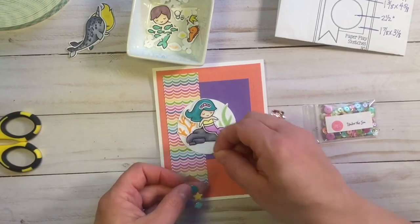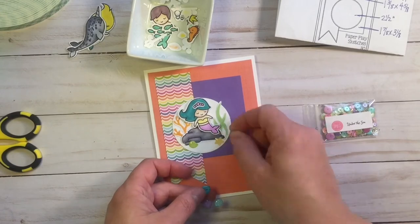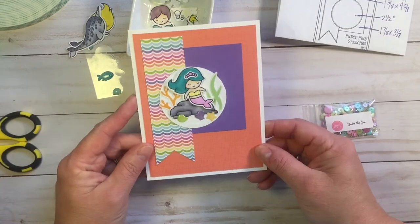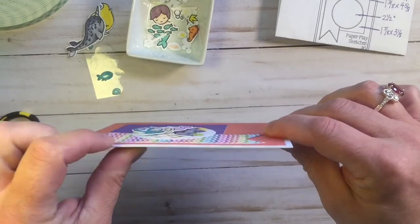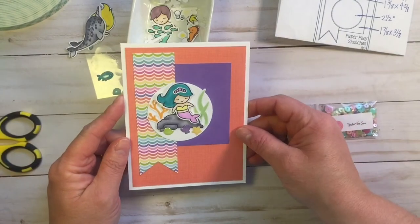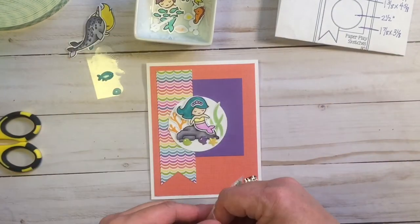And I decided I would use some of these enamel shapes to decorate around the rock. Just to kind of give it a little bit more pizzazz. And see, it's a very small amount of dimension there. This one would probably go through the mail, no problem.